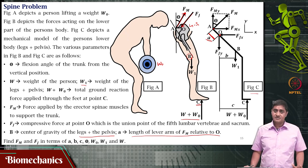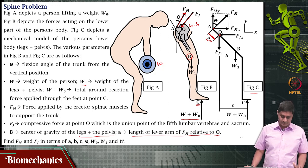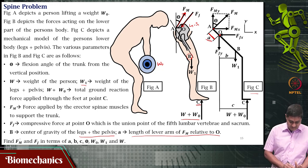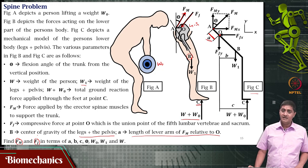The question is: if small a, small b, small c, theta, W naught, W1, and W are given to you, find the value of Fm and Fj in terms of these quantities. I need to find an expression for Fm and Fj in terms of small a, small b, small c, theta, W naught, W1, and W.